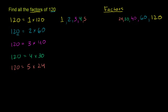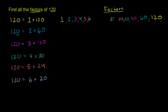Now let's move on to 6. Is 120 equal to 6 times something? To be divisible by 6, you have to be divisible by both 2 and 3. We know 120 is already divisible by 2 and 3, so it's definitely divisible by 6. In your head: 12 divided by 6 is 2, and with the 0, 120 divided by 6 is 20. So 6 times 20 are two more factors.